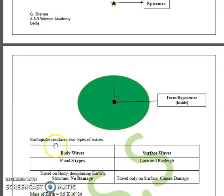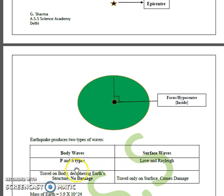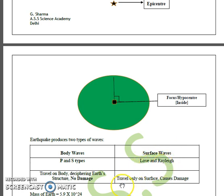Earthquakes produce two types of waves. First, body waves — also called P-waves and S-waves — which travel through the body of Earth. These help in deciphering the structure of Earth and do not cause damage on the surface. The second type is surface waves, classified as Love waves and Rayleigh waves, which travel only on the surface and are responsible for causing damage on Earth.